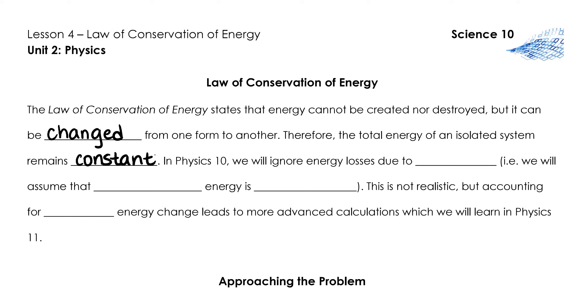In Physics 10, we're going to ignore energy losses due to friction. This means we'll assume mechanical energy is conserved. Now, this isn't very realistic because in reality, most interactions between objects involve some form of friction, whether something is sliding across the surface and there's friction between the object and the surface or something is falling through the air and there's friction between the air molecules and the object, but that makes the calculation rather advanced, and so we're going to save that for Physics 11. In Physics 11, we'll learn how to account for the changes in thermal energy that arise as a result of friction.